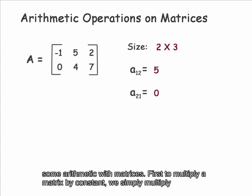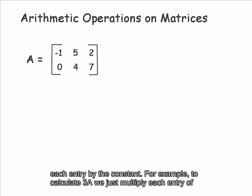Ok, let's do some arithmetic with matrices. First, to multiply a matrix by a constant, you simply multiply each entry by the constant.